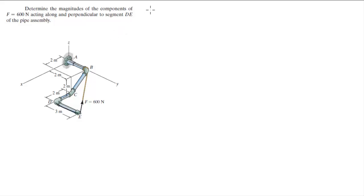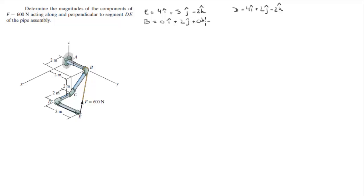The first thing you want to do is find the position vectors. E is 4i plus 5j minus 2k, D is equal to 4i plus 2j minus 2k, and B is equal to 0i plus 2j plus 0k. Let me verify: B is (0, 2, 0), E is (4, 5, -2), and D is (4, 2, -2). Perfect.